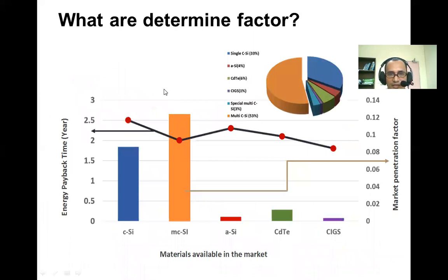The determining factors for industrial application or market adoption of materials are: energy payback time — how quickly the energy investment is recovered — and market penetration. Crystalline silicon, multi-crystalline silicon, amorphous silicon, cadmium telluride, and CIGS represent the industry. Thin film technologies have lower market penetration while silicon-based materials dominate. Multi-crystalline silicon has a shorter energy payback time than single crystalline, making it most favorable industrially. Among thin film technologies, cadmium telluride has the highest industry impact, which is why both multi-crystalline silicon and cadmium telluride are developing very rapidly.